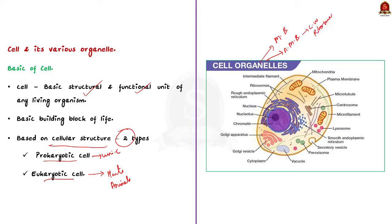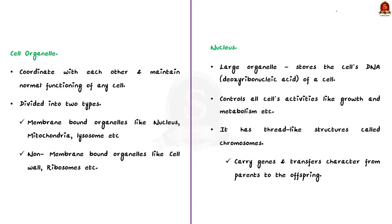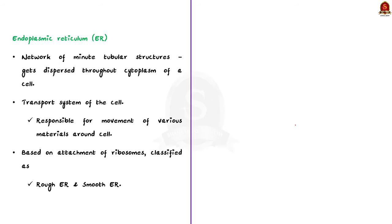Now let us see important points about various organelles. Firstly, the nucleus — it is a large organelle that stores the cell's DNA and acts like a CPU of the cell. Chromosomes are present inside the nucleus. Secondly, the endoplasmic reticulum is a network of tubular structures dispersed throughout the cytoplasm of the cell. It acts as a transport system of the cell, responsible for movement of various materials in and around the cell.